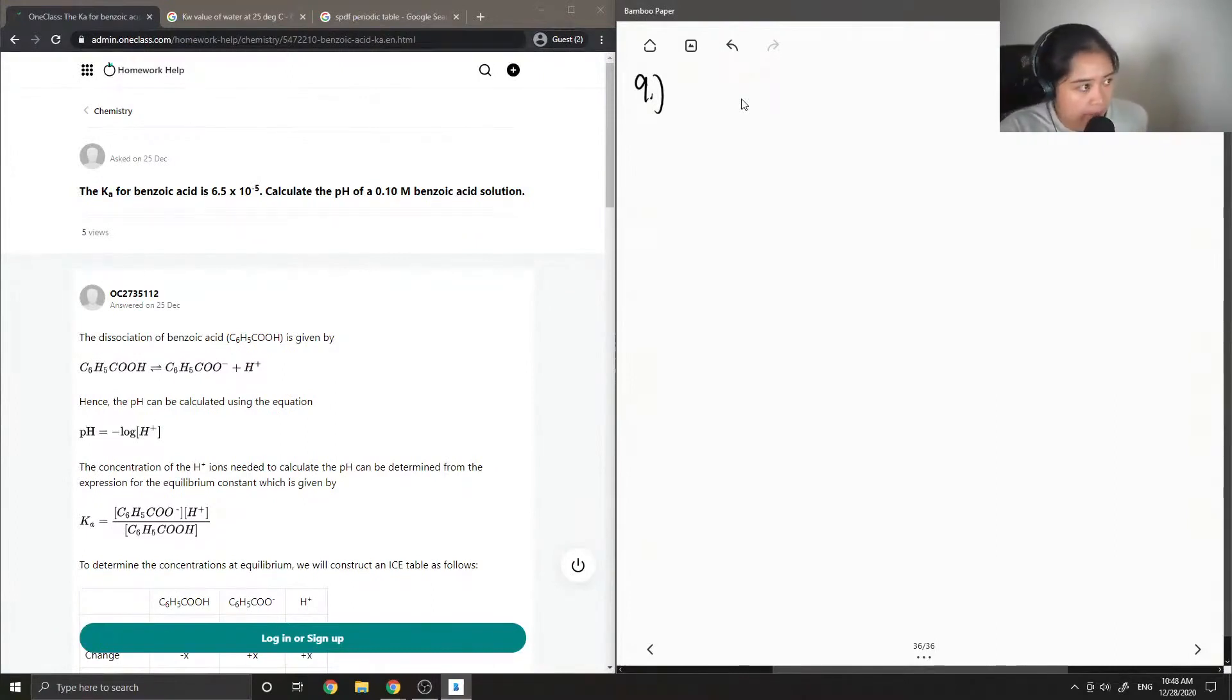Okay, so I'll draw the structure of benzoic acid. You have a benzene ring with carboxylic acid attached to it. So this is C6H5COOH.